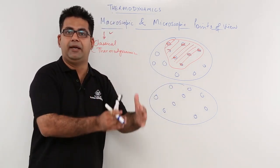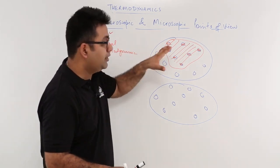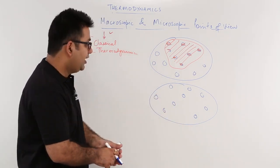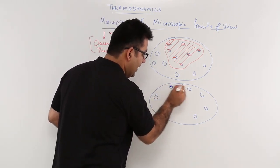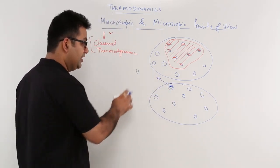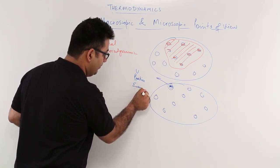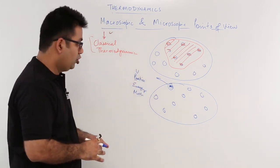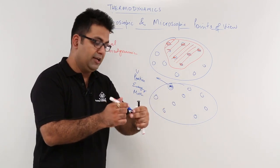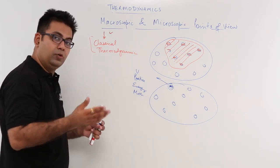Each molecule will have its own set of equations. In the macroscopic point of view we consider a collection or bulk of molecules as a single component, but in the microscopic view we consider each and every molecule as an independent entity. This means each molecule will have to be studied for its velocity, its position, its energy, and its momentum. There will be an infinite number of molecules in that particular substance, so this becomes very difficult to analyze.